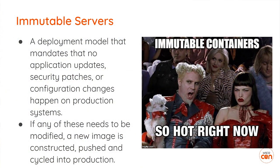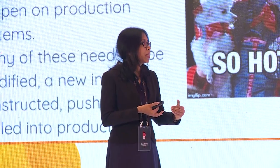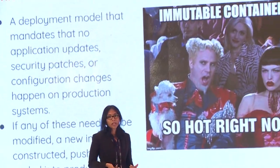Immutable servers is a deployment model that mandates that no application updates, security updates, or configuration changes should happen on production systems. If any change happens, a new image must be constructed and pushed into production.